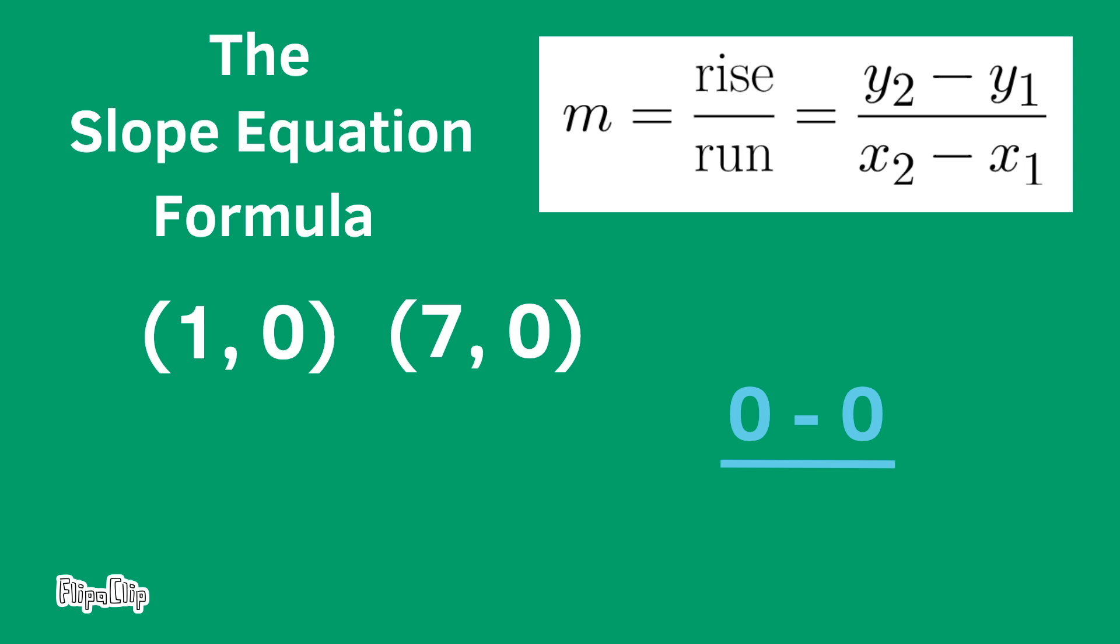y₂ minus y₁, or 0 minus 0, over x₂ minus x₁, or 7 minus 1. 0 minus 0 is 0 over 7 minus 1, or 6. The slope is 0 over 6, or 0 divided by 6. And 0 divided by 6 is 0. So the slope is 0.